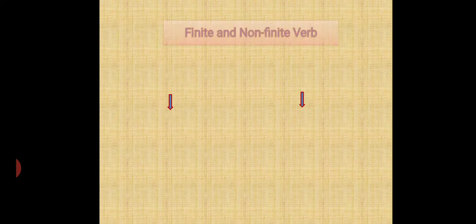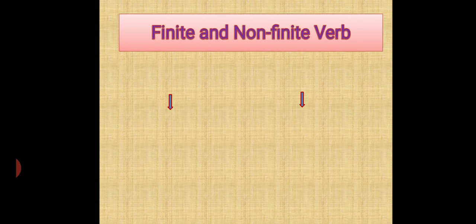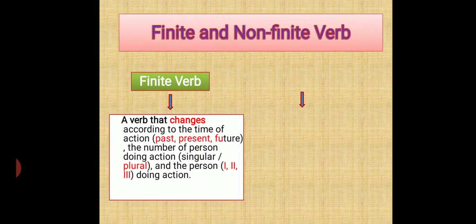Now, coming towards the finite and non-finite explanation. A finite verb is a verb that changes according to the time of action — that is past, present, and future — the number of persons doing the action, like singular or plural, and the person like first person, second person, or third person doing the action. First person is I and we. Second person is you. And he, she, it, they is your third person. So when a verb changes according to time, according to number, according to person, then it becomes your finite verb.